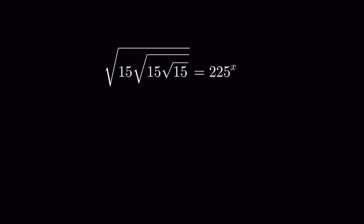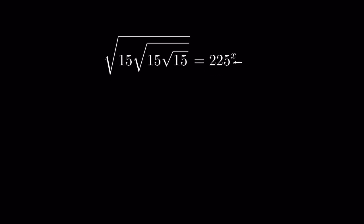In this question we have to find the value of x. When a is under square root, it means a is raised to the power of 1 upon 2. When it is again under square root, it means a raised to the power 1 upon 2, then again whole raised to the power of 1 upon 2.